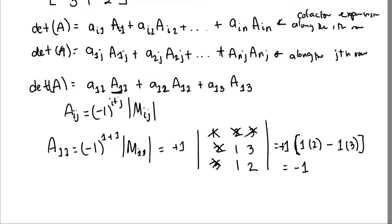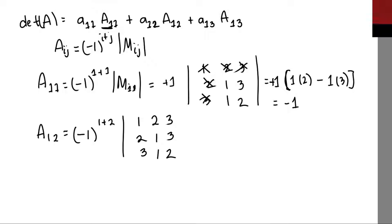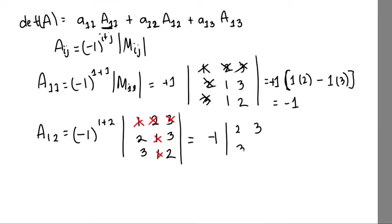For A_12: it's (−1)^(1+2) times the determinant of the minor formed by removing the first row and second column. The minor is [2,3; 3,2], giving det = 4 − 9 = −5. So A_12 = (−1) × (−5) = 5.